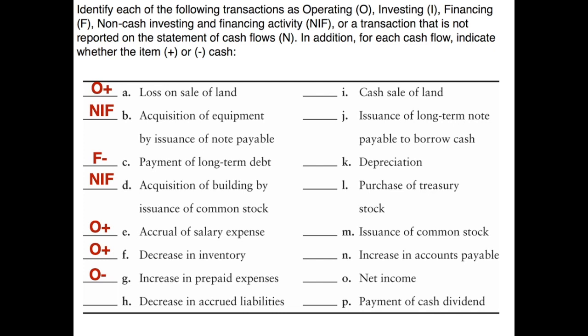A decrease in accrued liabilities: accrued liabilities are current liabilities that appear in the operating activity section. If they are decreasing, that means we are paying on them, so that would be a decrease to cash in the operating activity section. Now we have items I through P on the right-hand side. Please pause the video and see if you can complete the right column on your own, then come back and we'll check them together.